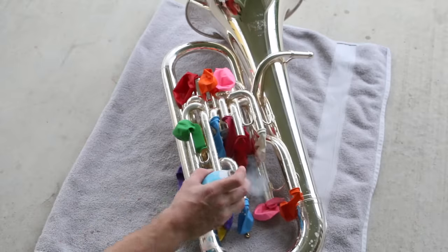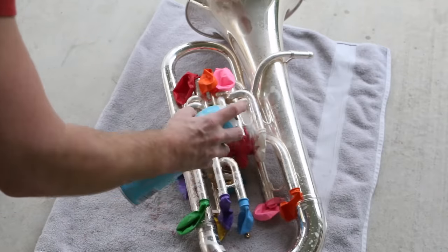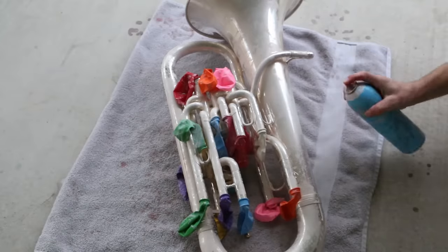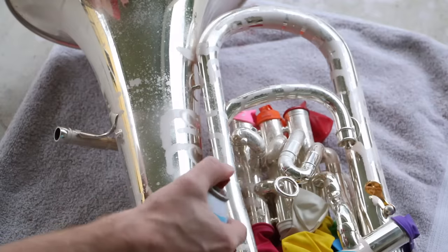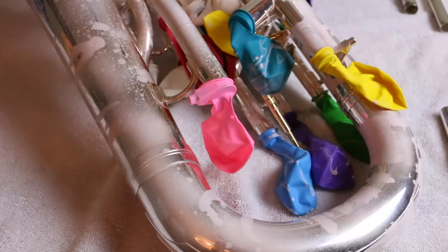Take your horn outside or to a well-ventilated area and spray the entire thing. Make sure you get in all of the cracks. You want to cover the entire instrument. Now there's no real science to this, but do your best to evenly coat everything. Let it dry for about two minutes. You'll know it's ready to polish when it turns a light shade of pink.